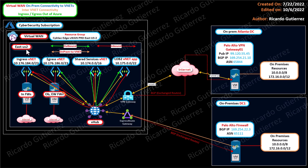In the East US 2 region, this architecture provides ingress inspection — that means it will protect your public facing applications, represented by the inbound red arrow. Then we have the egress VNet, which will be inspecting outbound traffic to the internet from your compute resources in Azure. We also have on-prem connectivity, which provides connectivity from on-premises to your Azure VNets, and the VNets will be able to communicate to your on-premises network.